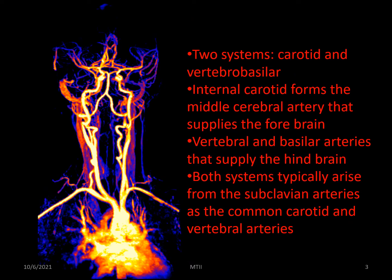Two arterial systems vascularize the brain, the brainstem, and to a large part of the spinal cord: the internal carotid and the vertebrobasilar. The former system comprises the anterior system and supplies the forebrain for the most part, while the latter supplies the hindbrain, cerebellum, and spinal cord. Both arteries average about 4 mm, with the carotid being a little larger. The circle of Willis is where the two systems link up, and this complex allows blood to be shunted back and forth as required.